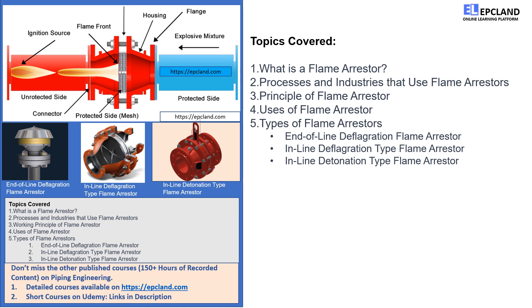Next, we will discuss the principle of flame arrestors. You will learn how flame arrestors work to prevent the propagation of flames through equipment. We will discuss the components of a flame arrestor such as high thermal conductivity elements and channels or passages that absorb the heat of the burning gas or vapor. Then, we will cover the uses of flame arrestors. You will learn how flame arrestors are used to prevent the ignition of gas or vapors, stop the propagation of flames, confine the fire within a controlled region, limit the spread of an explosion, and stop the spread of an open fire.